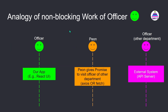Let's understand the situation. We have our front-end application — say a React application. We make an API call using Axios or Fetch API, which we can relate to the peon bringing the signature or bringing data from the API. The second officer, at some remote place, relates to an external server or API server. Our front-end application requests data from the API server using Axios or Fetch, which does the task behind the scenes on another thread. When the officer makes the call to Axios, it returns immediately — but it cannot return data because the data is not yet available, so it returns a promise.